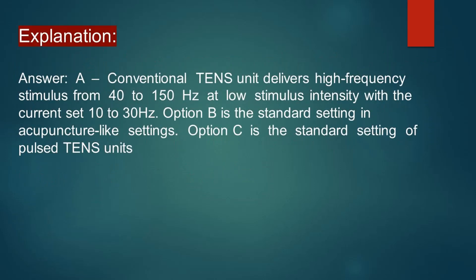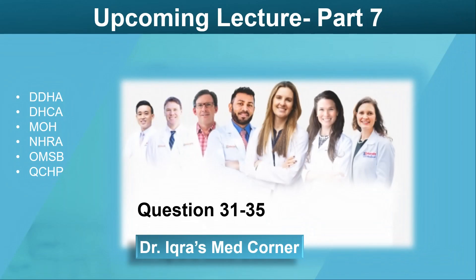In conventional TENS, the unit delivers high frequency stimulus from 40 to 150 Hz at low stimulus intensity, with the current set at 10 to 30 Hz. Option B is the standard setting for acupuncture-like TENS, and Option C is the standard setting for burst TENS units. That's all for today; we are going to cover the next scenarios in our upcoming videos. Thanks for watching.